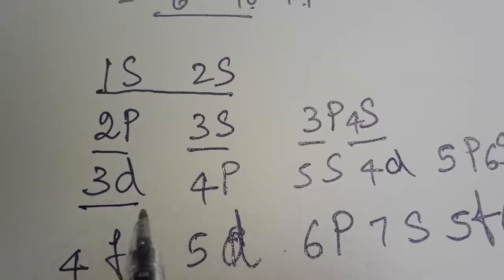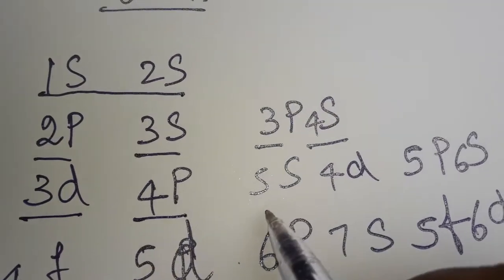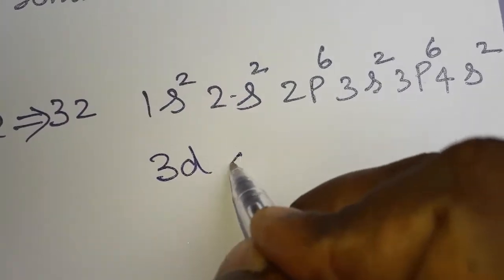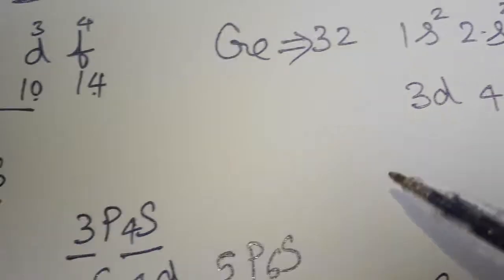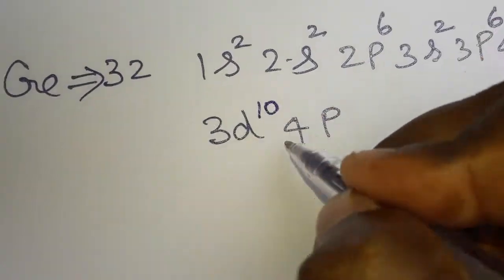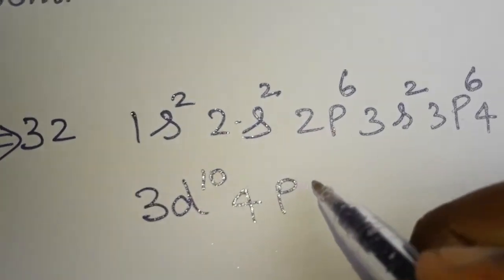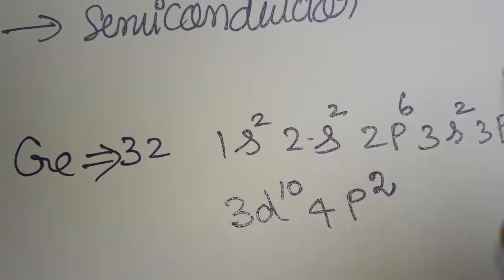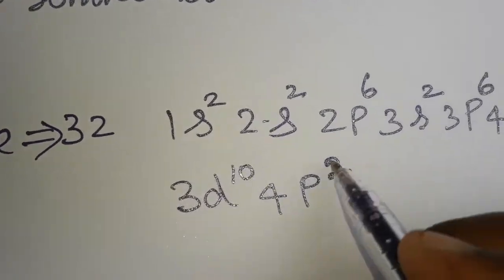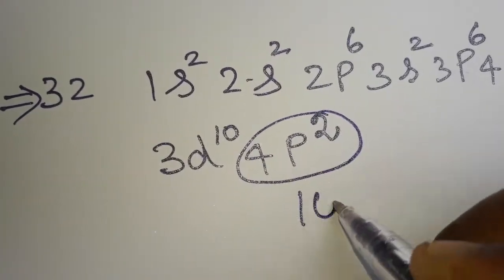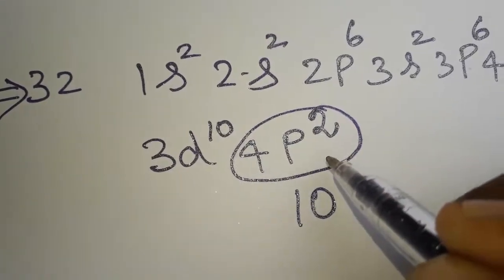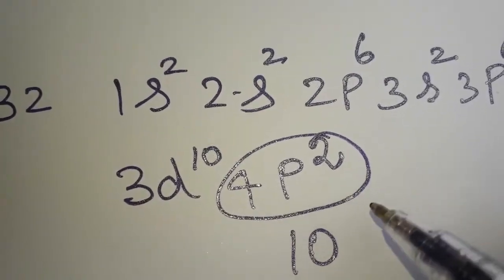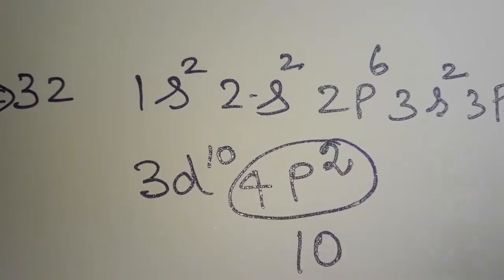For the remaining 12 electrons, we take 3d and 4p. The d orbital can hold 10 electrons and p can hold 6, but we only have 12 remaining. So 3d gets 10 electrons and 4p gets only 2 electrons — not the full 6 required. This completes the germanium electronic configuration.